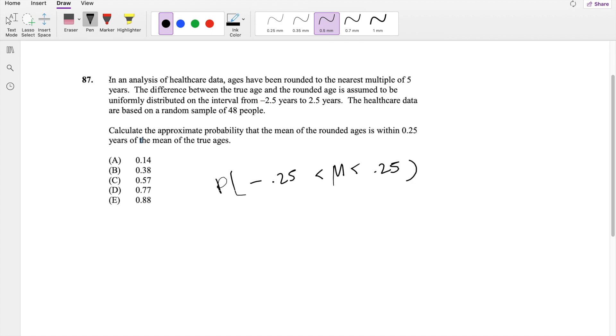Actually, I'm going to call this X, not mean. They also tell you here that the difference between the true age and the rounded age is assumed to be uniformly distributed on this interval here.